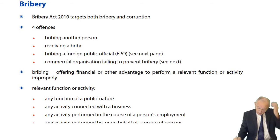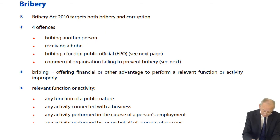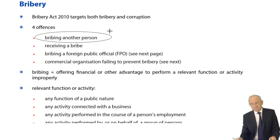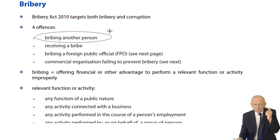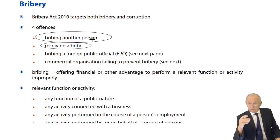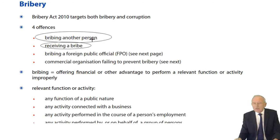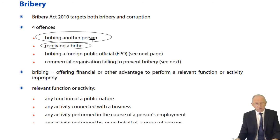The Bribery Act targets both bribery and corruption, and there are four offences. There's the obvious one about bribing another person. The second offence is receiving a bribe — both are clearly obvious. If you receive a bribe, then you're committing an offence. You're encouraging the act; you're encouraging the continuance of the process of bribery and corruption.